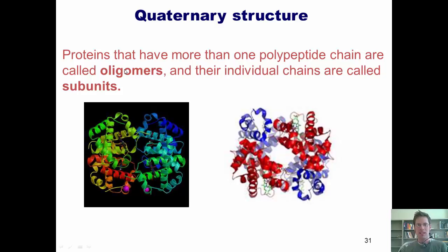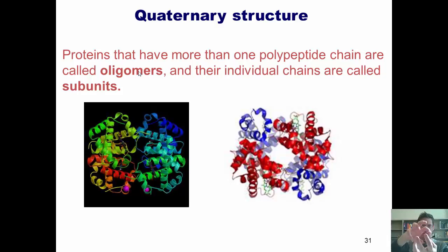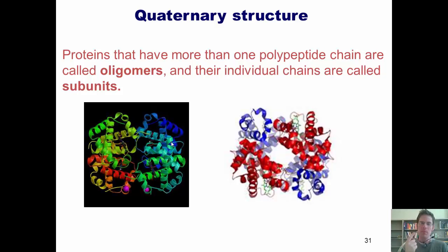Proteins that have more than one polypeptide chain are called oligomers, and their individual chains are called subunits. You could look at one big cluster and say that's an alpha subunit and this is a beta subunit — they interact together to form this protein. The protein shown here is hemoglobin. Most varieties of hemoglobin have four separate polypeptide subunits, so we can say that hemoglobin has a quaternary structure. Any proteins that only have one polypeptide chain do not have quaternary structure.